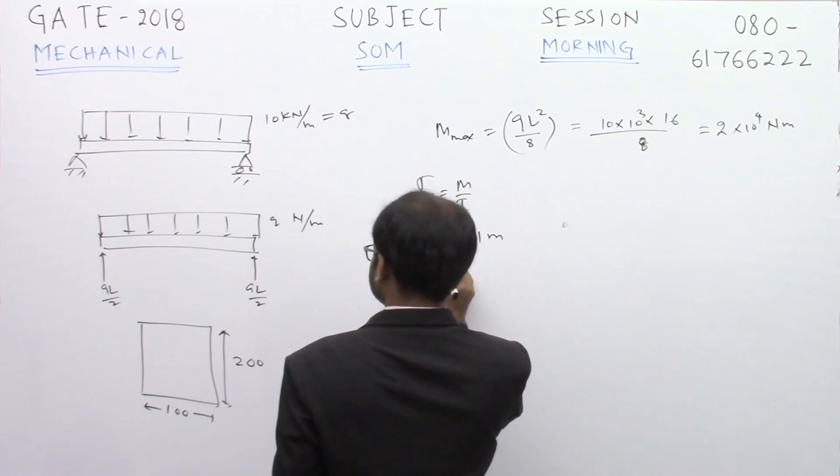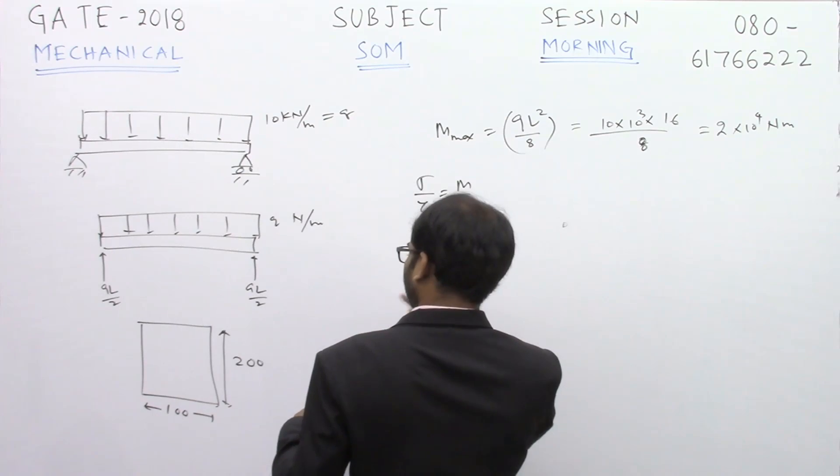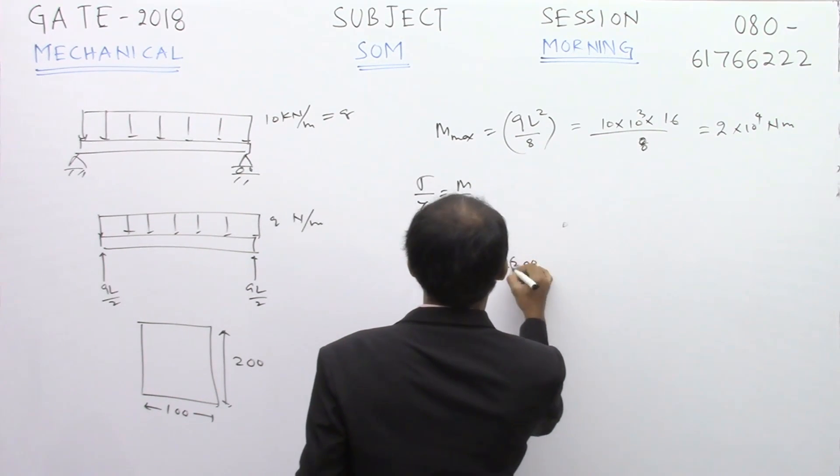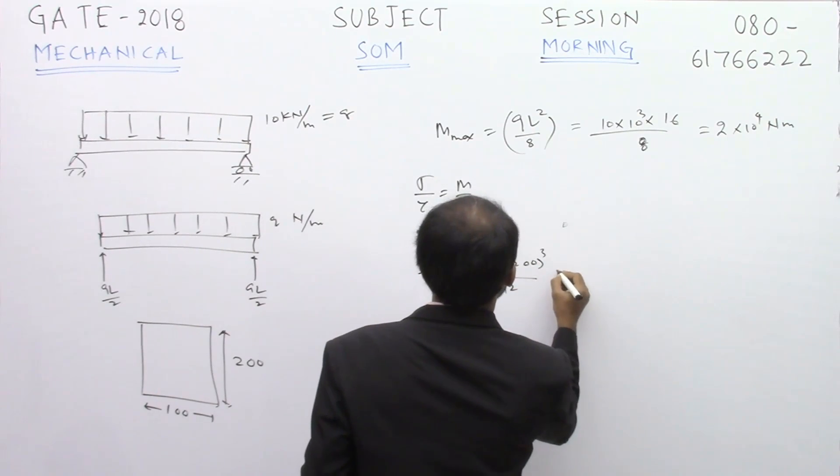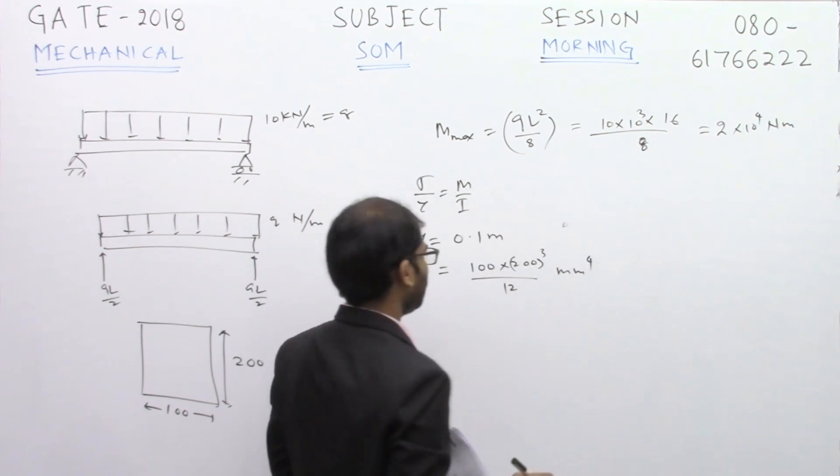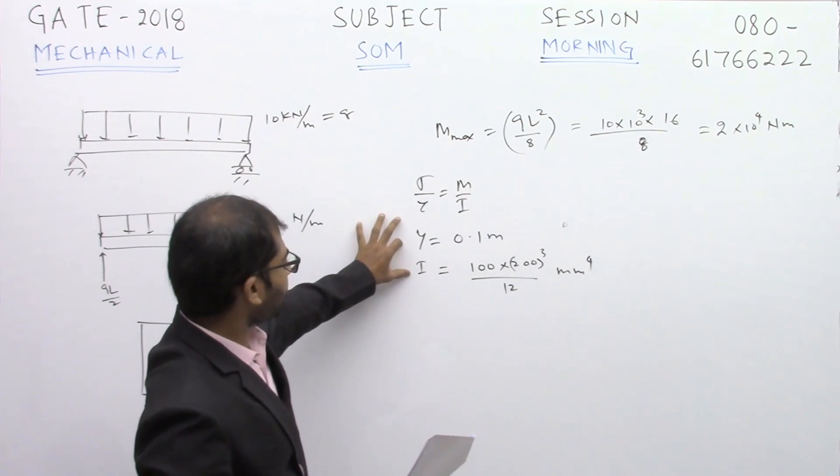That's 0.1 meter. And I is equal to BD³/12, so 100 × 200³/12 millimeters to the fourth power. These are the y and I values.